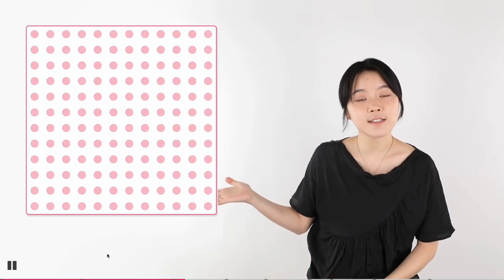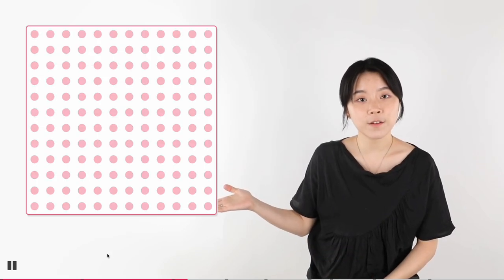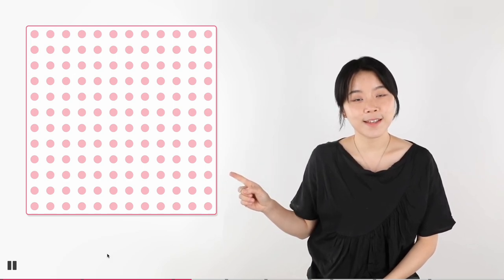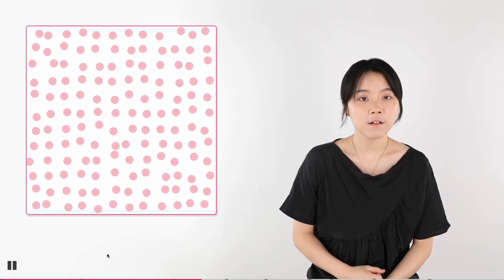But what if we want some dotted patterns? Instead of drawing them one by one with our hand, we can create countless of them with a for loop. And they can all be animated too. We can add randomness to their behavior so it would look like they're walking on their own.